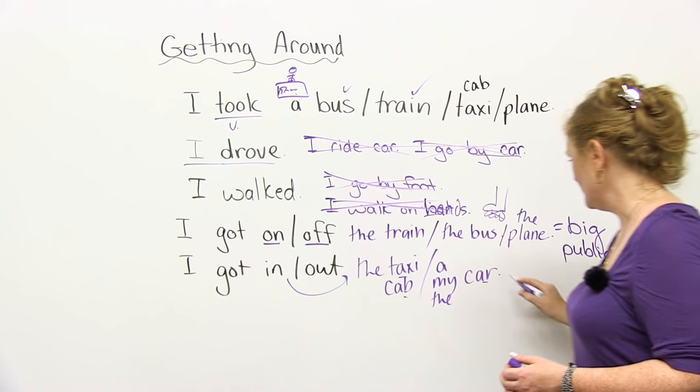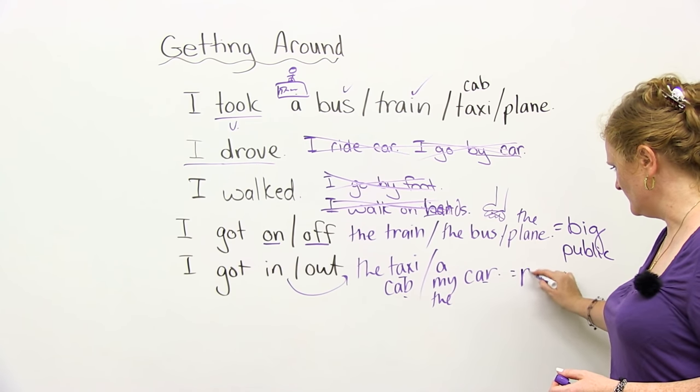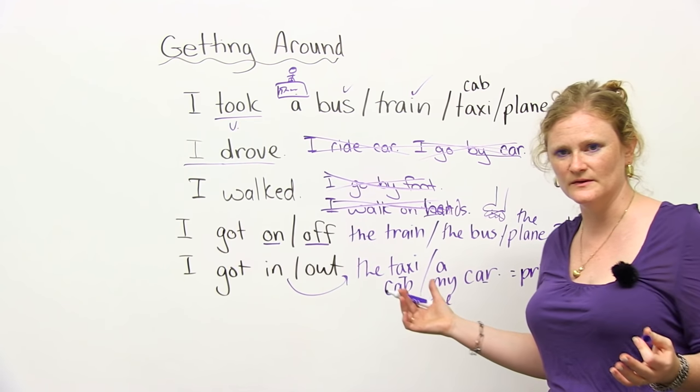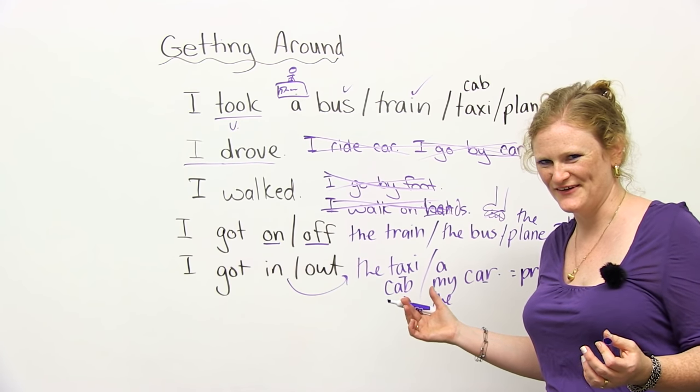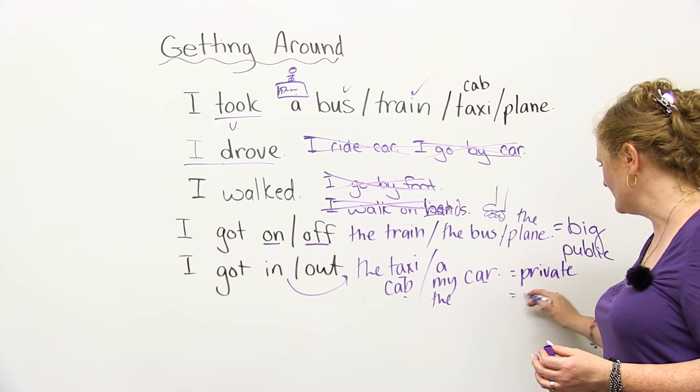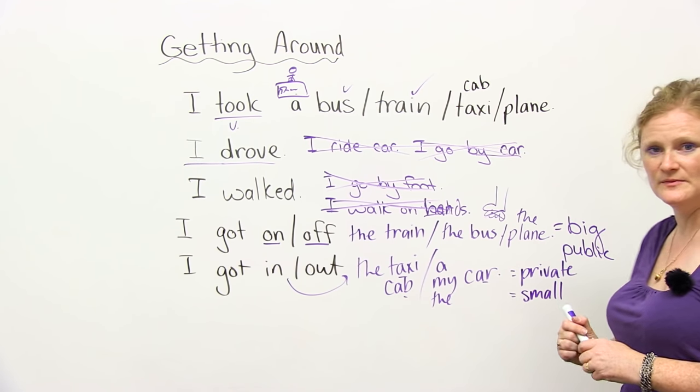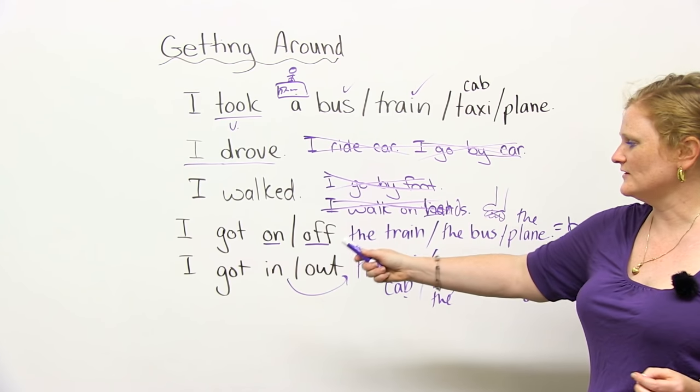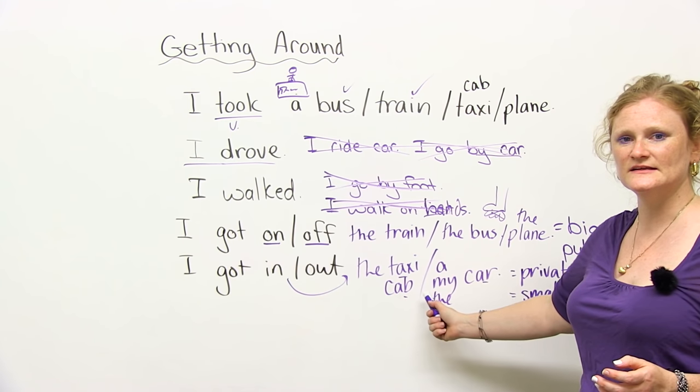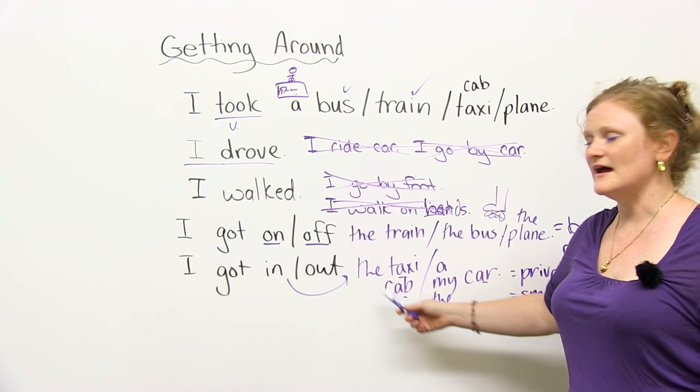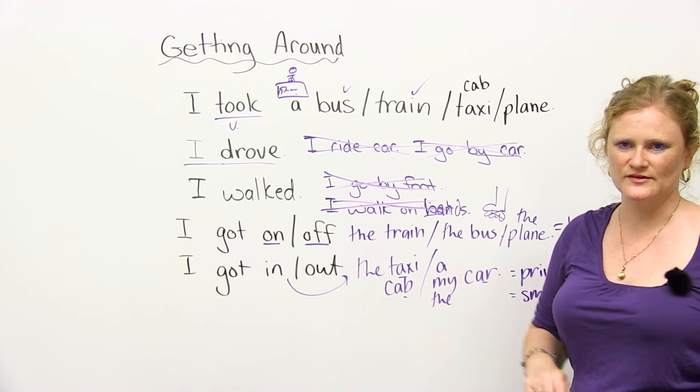So what does taxi and a car or a cab have in common? Do you know the answer? They are private. There aren't a lot of people in your car or in your taxi. And they're small, which means they can't have as many people as on a train, a bus, or an airplane. So you're going to say I got in the taxi and I came to school. Or I got out of the taxi and I went to the bar.